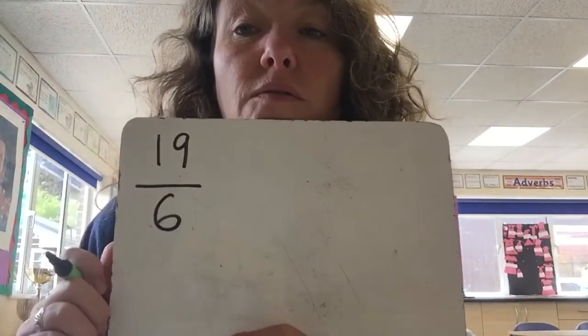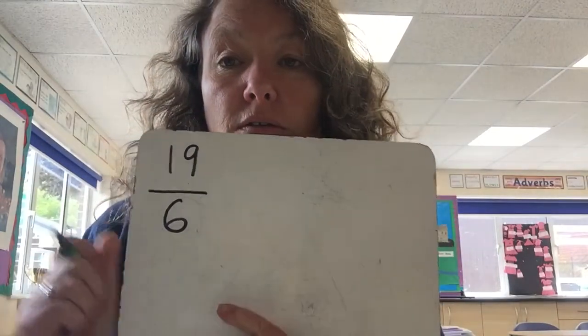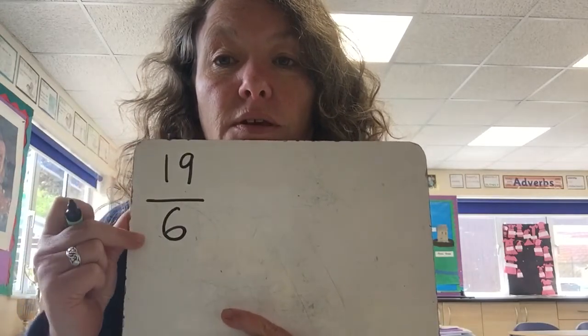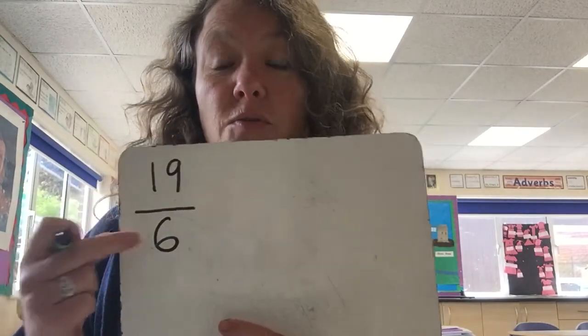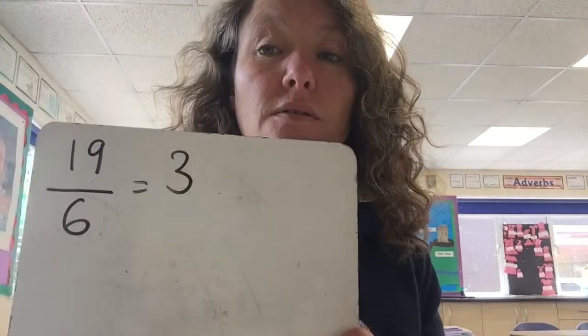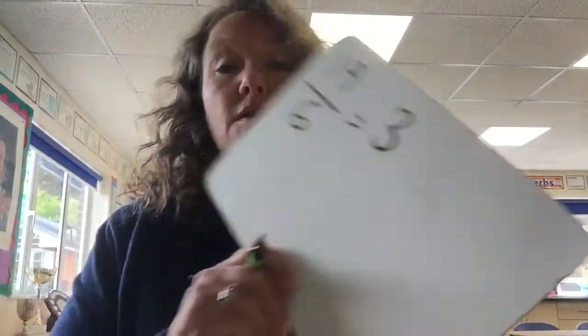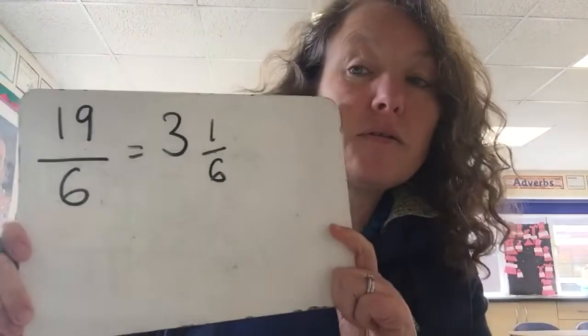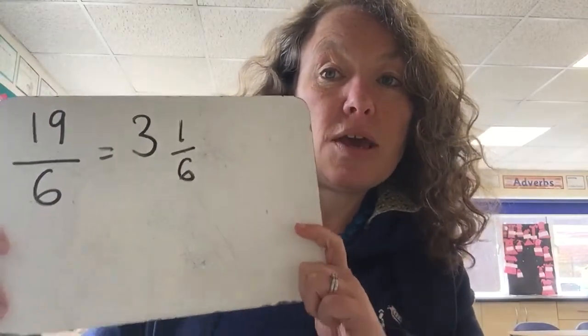So if we look at another one, let's try 19 over six. We've got 19 over six, or 19 divided by six — remember, that's the dividing line. 19 divided by six: how many sixes in 19? Well, that's three. So we've got three whole ones, and we've got one left over. That one is one-sixth because we're dealing with sixths. So 19 over six equals three and one-sixth.